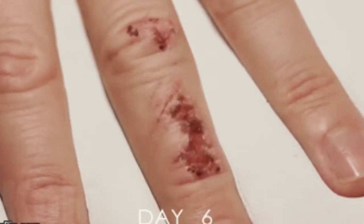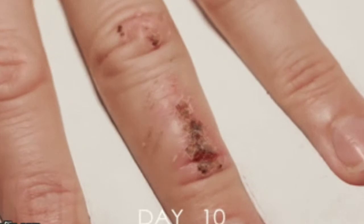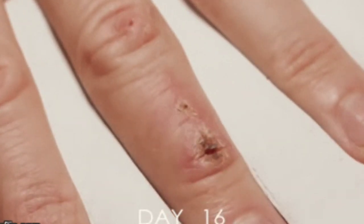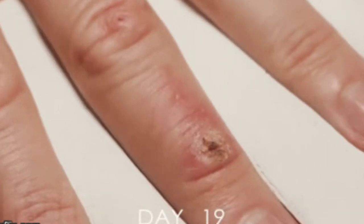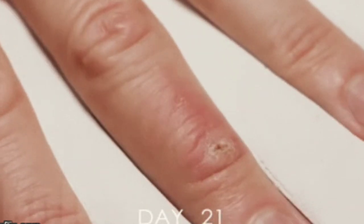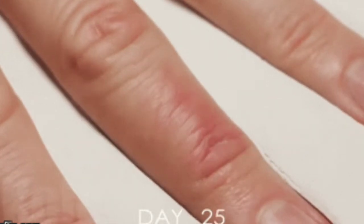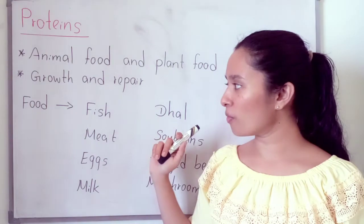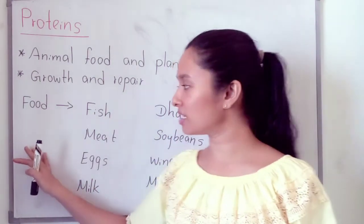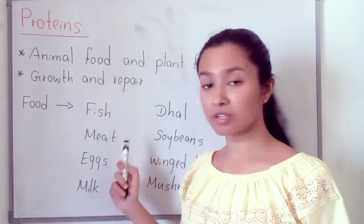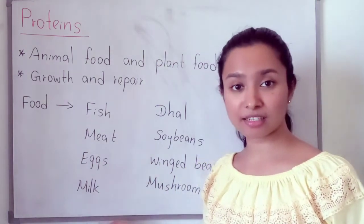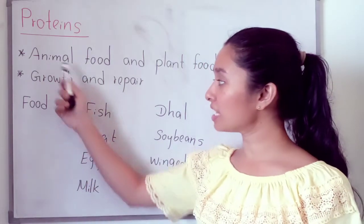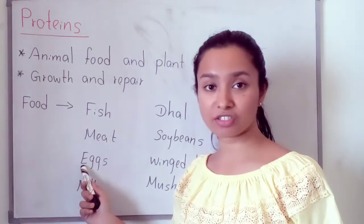That means, think about when we get injured — after getting injured our cells get damaged, and for repairing those cells we need proteins. So, for growing and repairing, we need proteins. Food items rich in proteins include: fish, meat, eggs and milk — these are the animal food items rich in proteins.